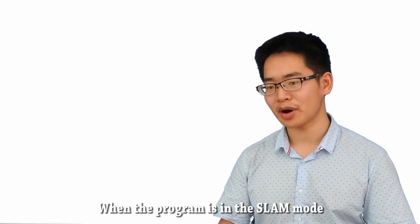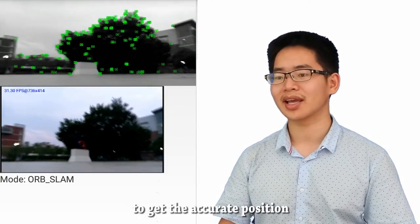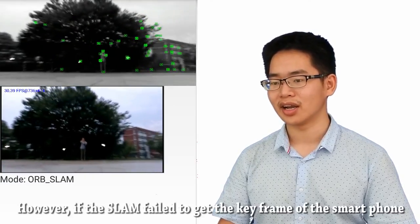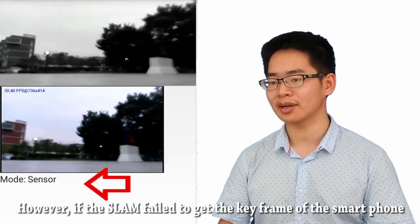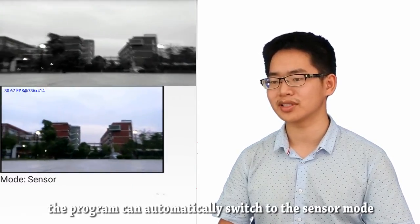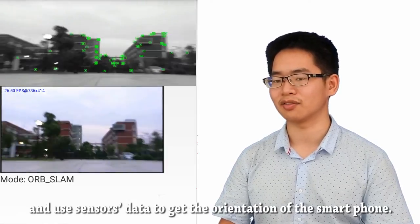When the program is in the SLAM mode, the camera can work together with the sensor to get the accurate position and orientation of the smartphone. However, if the SLAM fails to get the keyframe of the smartphone, the program can automatically switch to the sensor mode and use sensor data to get the orientation of the smartphone.